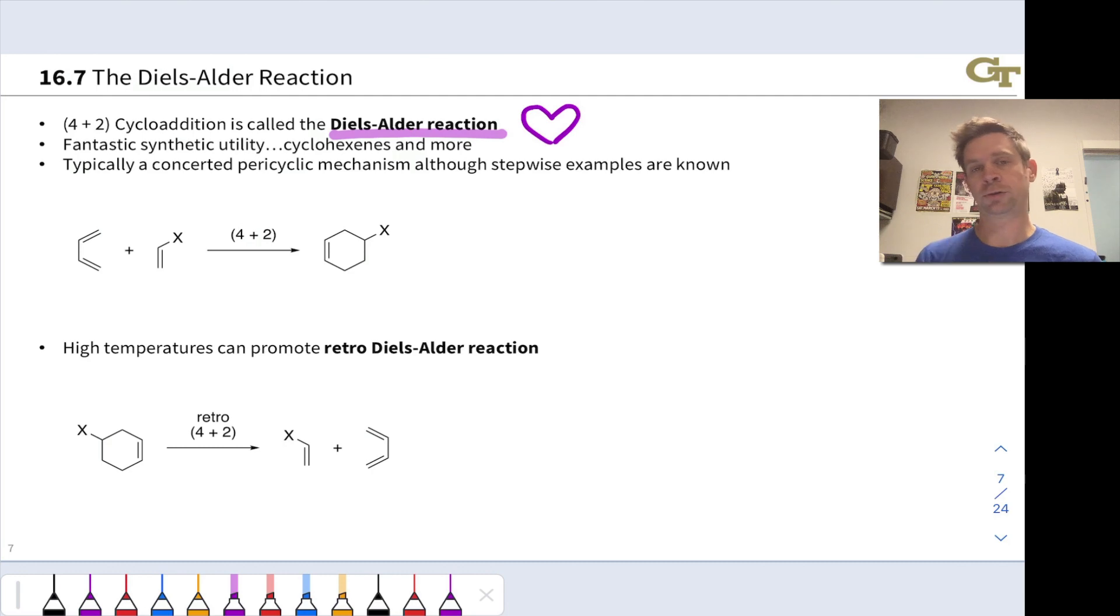Most Diels-Alder reactions proceed through concerted pericyclic mechanisms, meaning there are no ionic intermediates. We're going to focus on those in this course because they're relatively easy to understand and relatively easy to predict the outcome of.